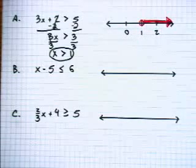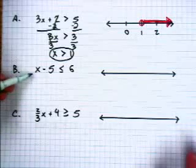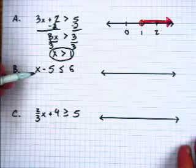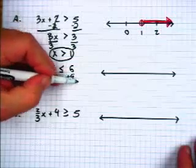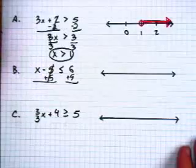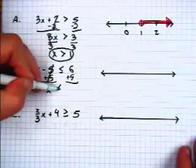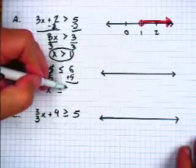Now let's take a look at the next problem. How do we isolate the x to get it alone? Well, add 5 to both sides. 5 is gone. x is less than or equal to 11.